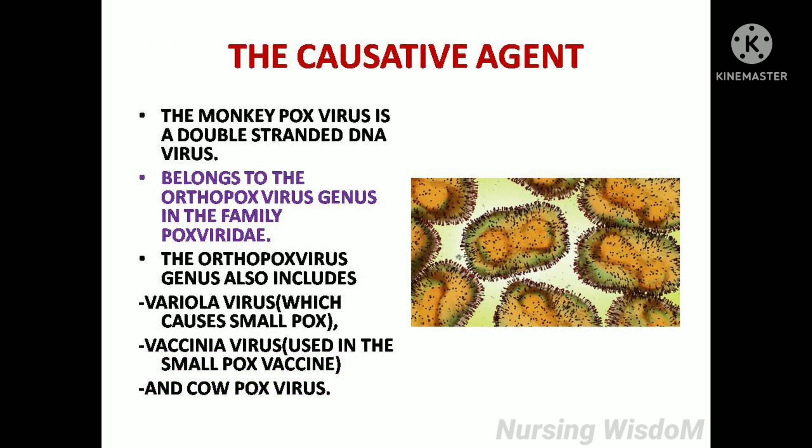The causative agent: the monkeypox virus is a double-stranded DNA virus belonging to the orthopoxvirus genus in the family Poxviridae. The orthopoxvirus genus also includes variola virus, which causes smallpox, and vaccinia virus, which is used in the smallpox vaccine, and cowpox virus.